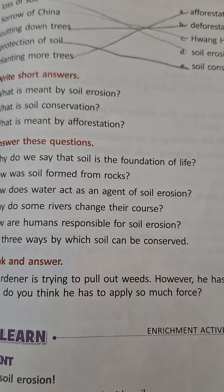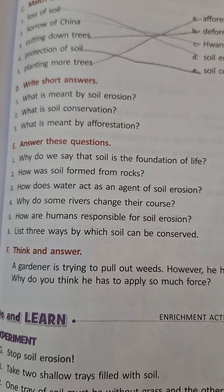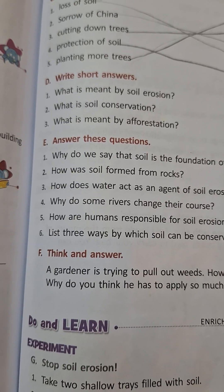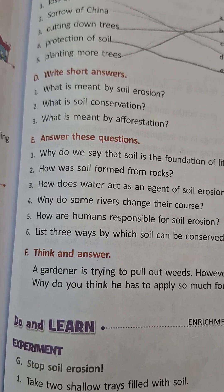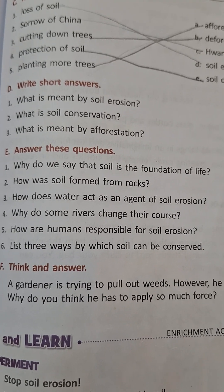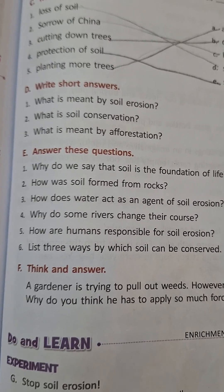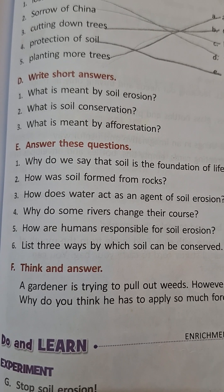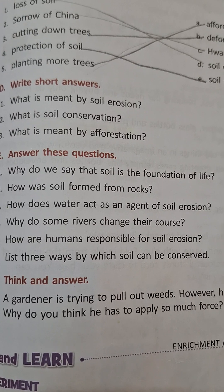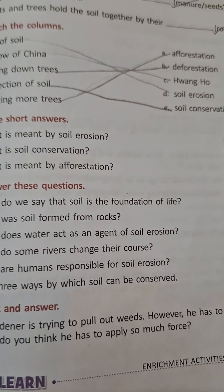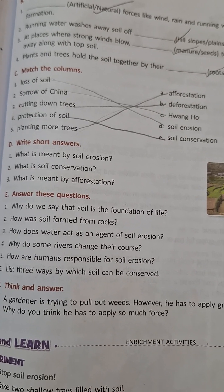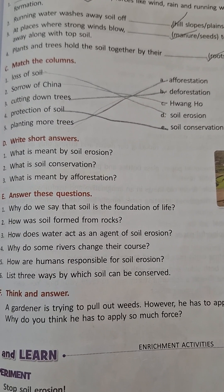How are humans responsible for soil erosion? Where trees are cut down, the soil becomes loose and is easily carried away. Ploughing of hill slopes is another human factor that leads to soil erosion. Overgrazing by cattle and deforestation also cause soil erosion. Soil can be conserved by afforestation, growing cover crops around the farmer's land, and building embankments along river banks. Cutting slopes into steps or terraces can also help conserve soil.